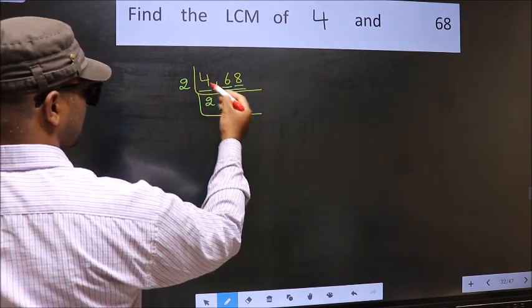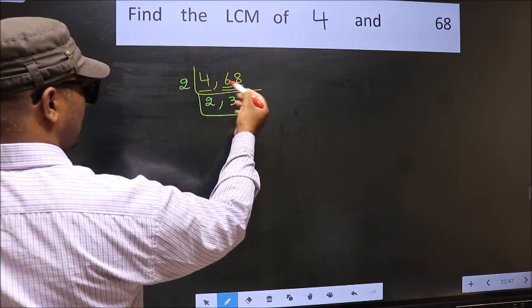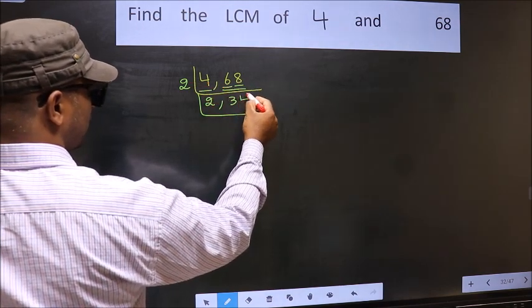First number 6. When do we get 6 in 2 table? 2, 3, 6. The other number 8. When do we get 8 in 2 table? 2, 4's 8.